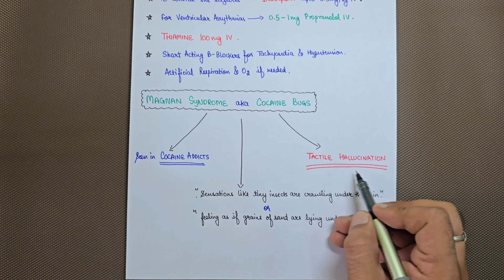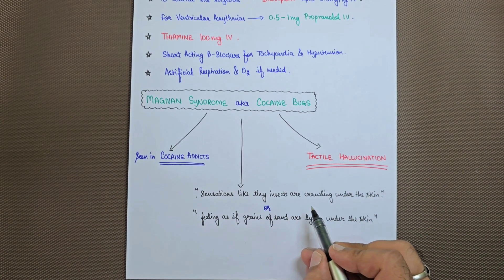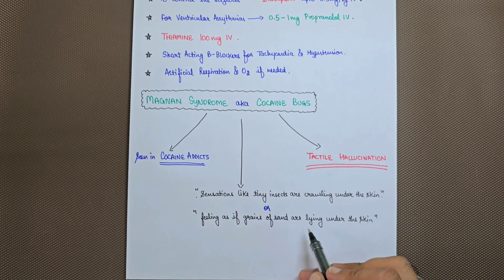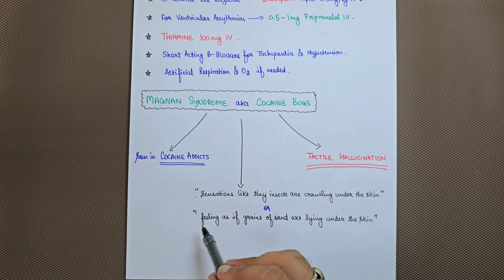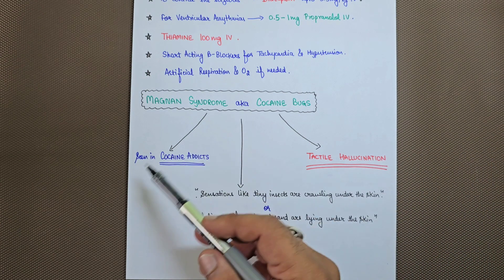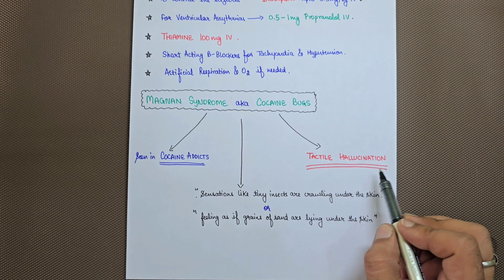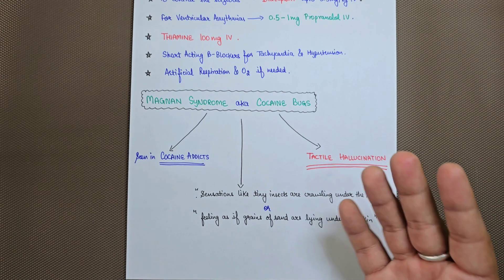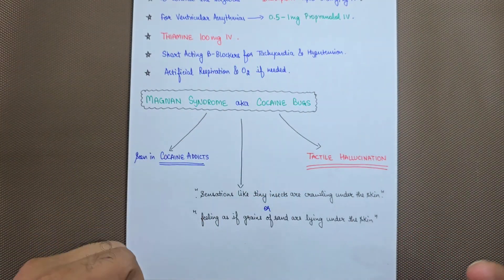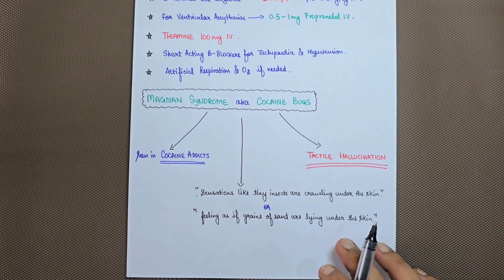They usually feel tactile hallucinations, sensations like tiny insects are crawling under the skin, or feeling as if grains of sand are lying under the skin. This is all about Magnan syndrome related to cocaine addicts who abuse it for a longer period of time.